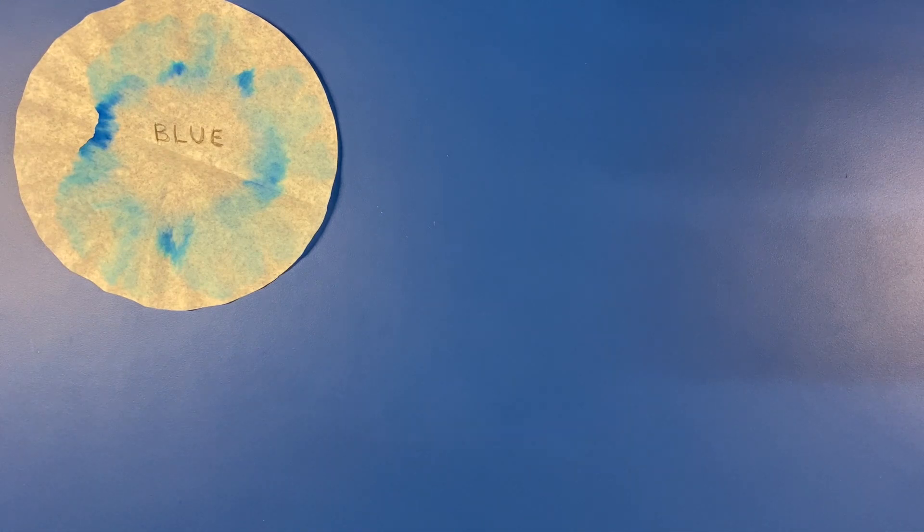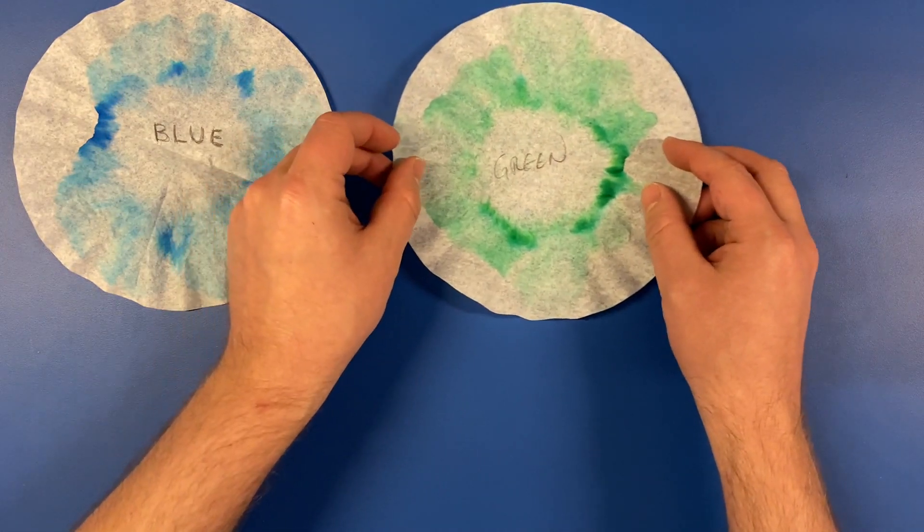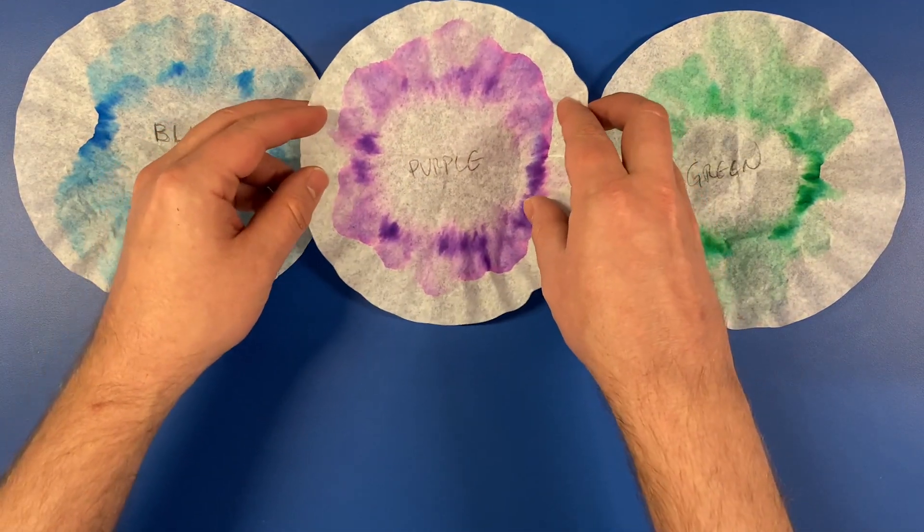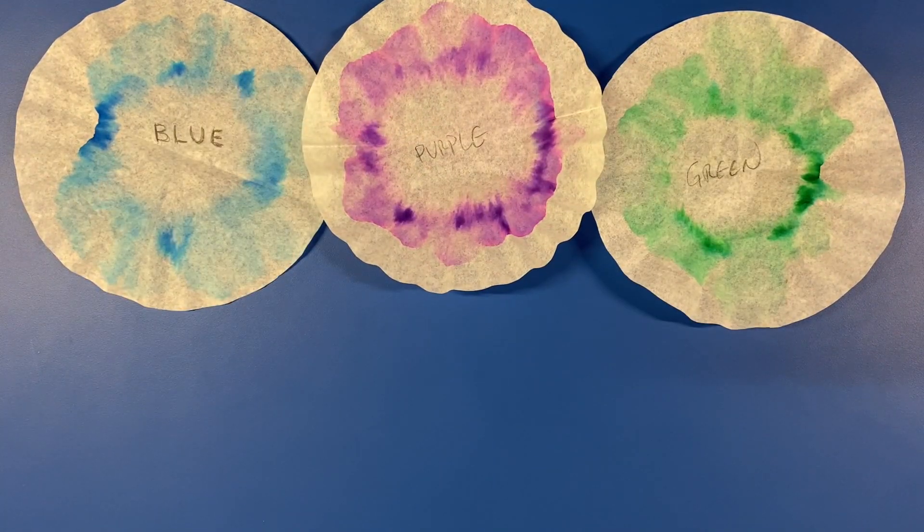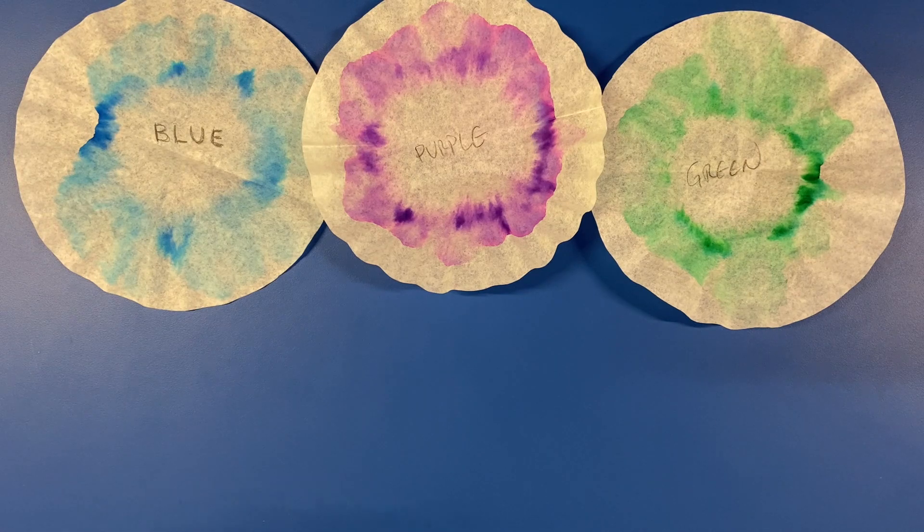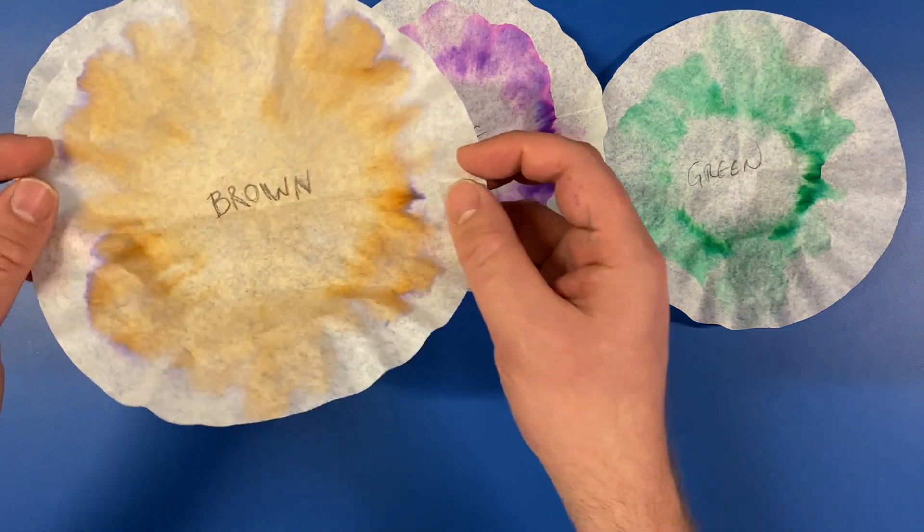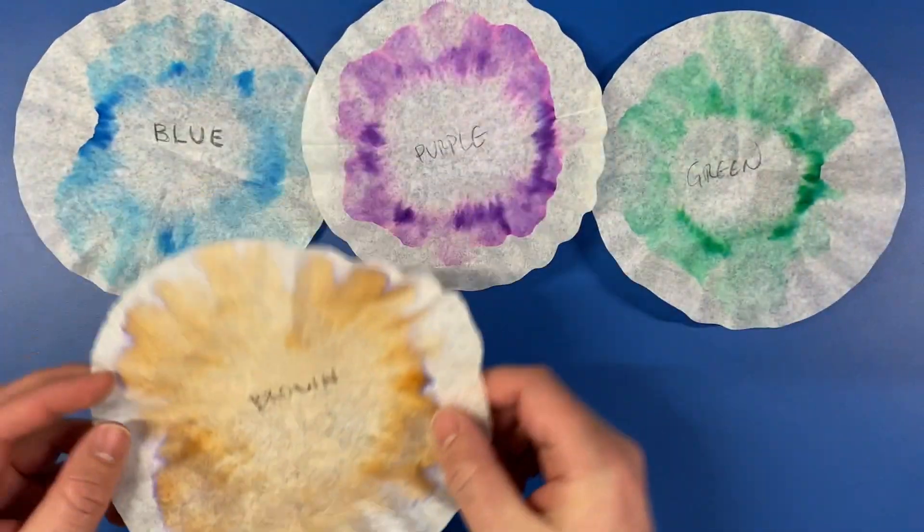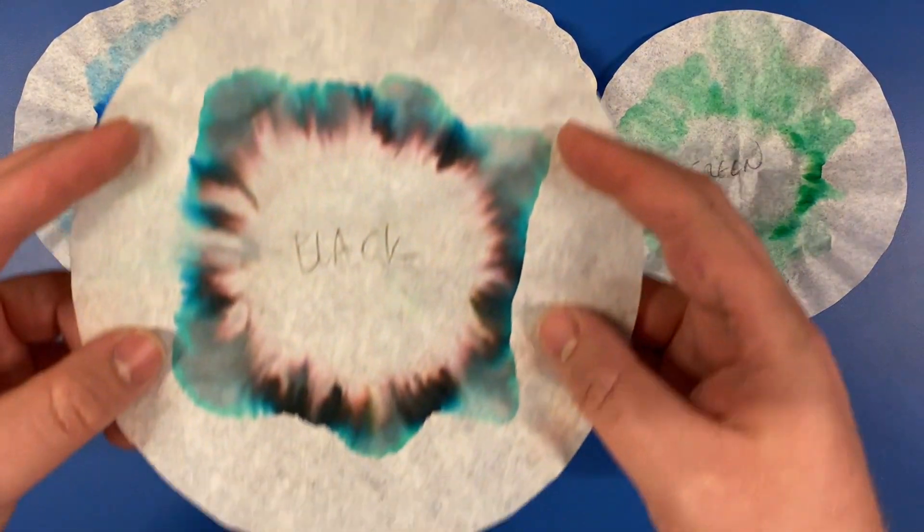After letting them dry, it took mine about 45 minutes, take a look at the way the ink bled. The lighter colors look very pretty, but the darker colors are a bit more interesting. The brown has a few different colors in it, kind of like a leaf in the fall. And the black looks really cool!